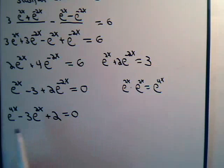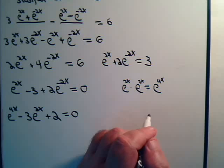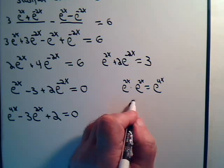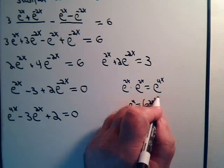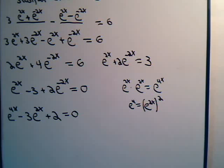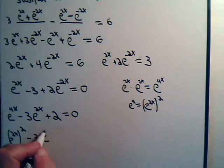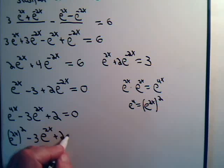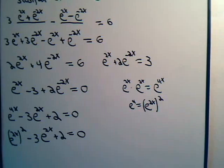Looking at this equation, e^(4x) can also be written as (e^(2x))^2, since squaring e^(2x) gives e^(4x). So we have (e^(2x))^2 minus 3e^(2x) plus 2 equals 0. This looks like we should have a quadratic equation.